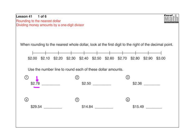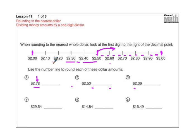It says to use the number line to round each of these dollar amounts. So here I have two dollars — that's an even dollar amount — and here I have three dollars, also an even dollar amount. We're going to think about where these money amounts fit onto this number line. Right in the middle we're going to round up. Anything over two-fifty rounds up to three dollars; anything below two-fifty rounds down to two dollars.